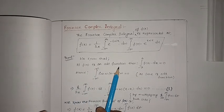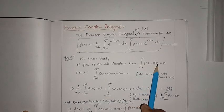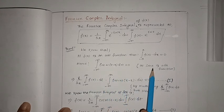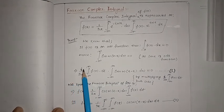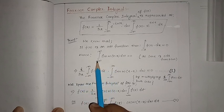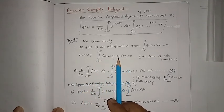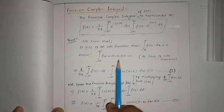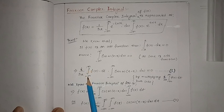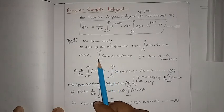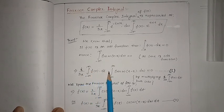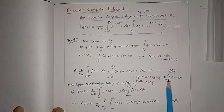We know that if f(x) is an odd function, then the integral from minus a to a of f(x) dx is zero. Hence, the integral minus infinity to plus infinity of sin(ωt - x) dω equals zero because sine is an odd function. Therefore, multiplying i by two pi times integral of f(t) dt on both sides with this result gives i by two pi times the double integral of f(t) sin(ωt - x) dω dt equal to zero. Let this be equation number one.